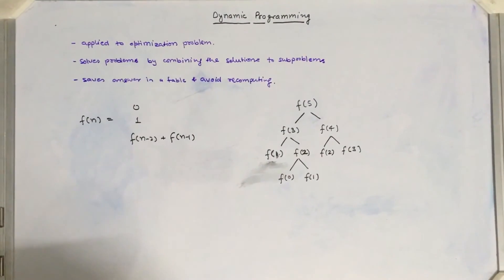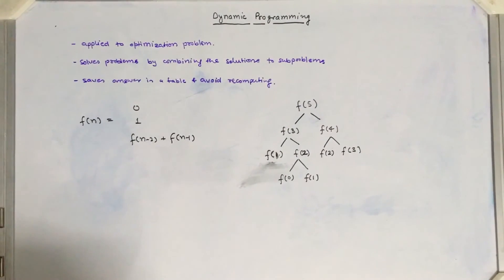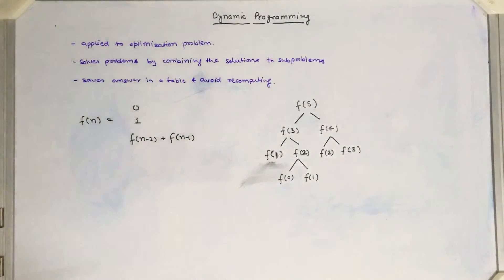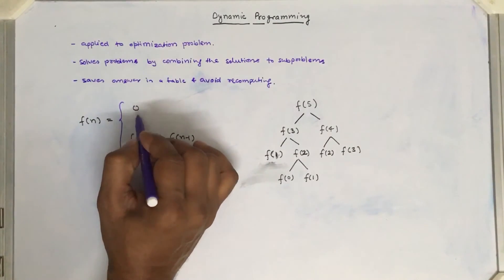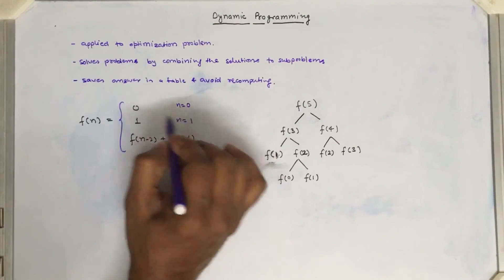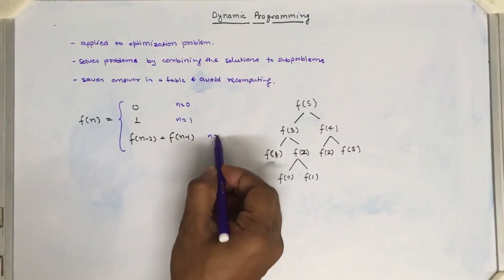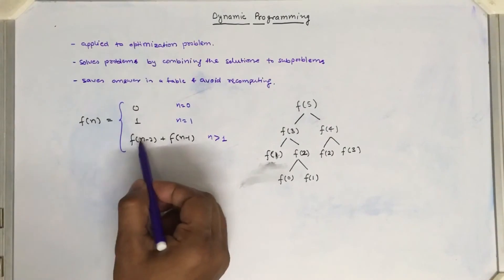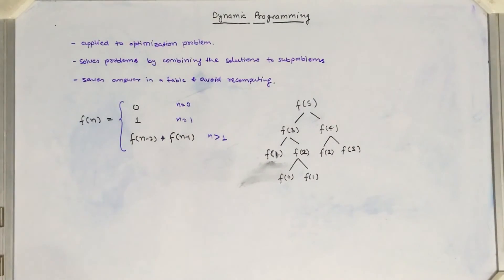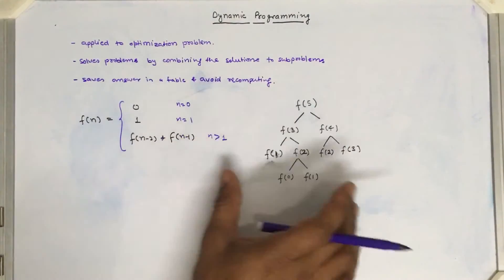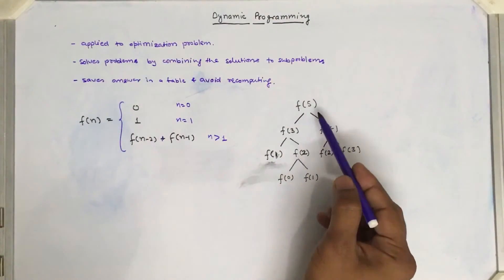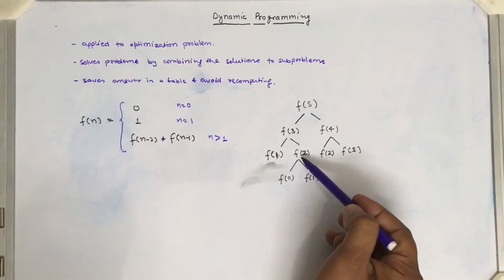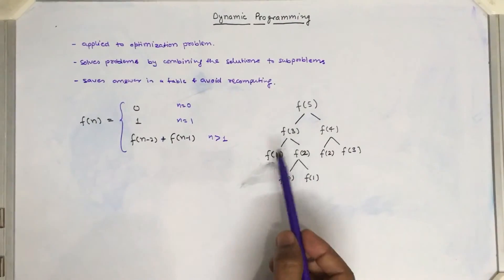Here is a small example: calculating the Fibonacci series. If we draw a recursive function for Fibonacci, there are two base cases — when n equals 0 it returns 0, and when n equals 1 it returns 1. For n greater than 1, it recursively calls f(n-2) plus f(n-1). When we draw the recursion tree for input n equals 5, it calls f(3) and f(4), and f(3) is further divided into f(1) and f(2), and f(2) is further divided as well.